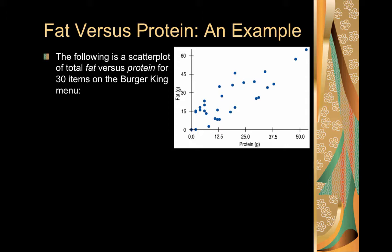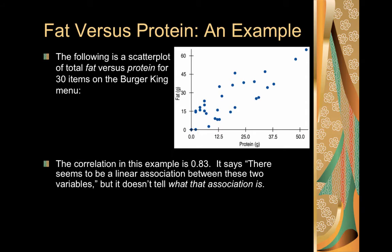So we can calculate the correlation coefficient, which may tell us more. In this case, the correlation coefficient r ended up being 0.38. So it says that there seems to be a linear association, it would be positive, and it's moderate because it's only about 0.83. But it doesn't really tell us what that association is or what that really means.